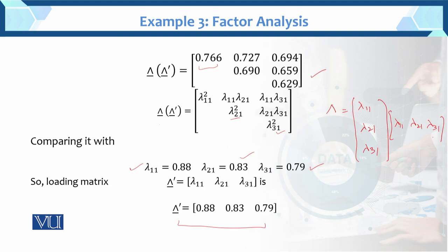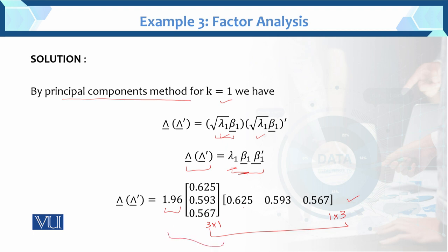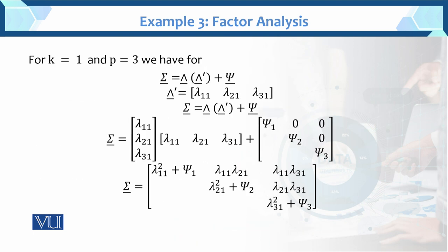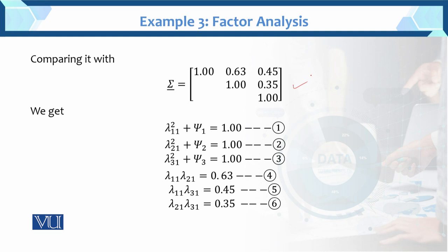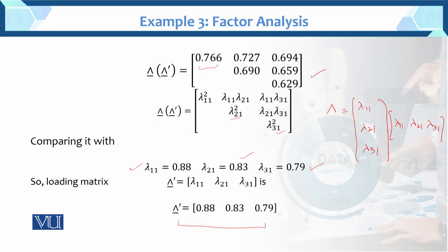All of this was solved using eigenvalues and eigenvectors — the full solution. We used eigenvalues and then eigenvectors to apply the principal component method. For k equals 1, one-factor solution with three variables, we have this. The general formula is: Sigma equals Lambda times Lambda prime plus Psi. So Sigma equals Lambda Lambda prime plus Psi. We obtained the sigma values and compared, forming six equations from which we find the lambda loading values lambda 11, lambda 21, lambda 31.